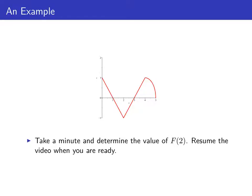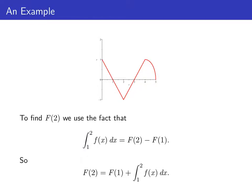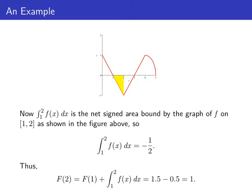Now let's determine big F of 2 using the same idea. Big F of 2 minus big F of 1 equals the definite integral of little f of x dx from 1 to 2. Solving for big F of 2, we get big F of 1 plus that definite integral. On the interval from 1 to 2, the graph of little f is below the x-axis, so the integral is negative — it's the opposite of the area of the yellow shaded triangle of height 1 and base 1, which is negative one half. So big F of 2 equals 1 and a half minus one half, or 1.